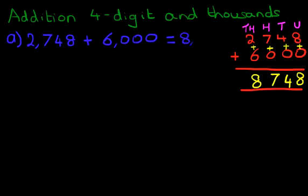8,748. 2,748 plus 6,000 is 8,748. That is correct.